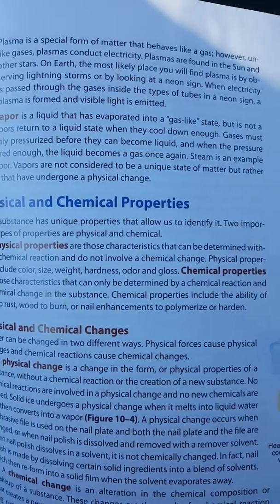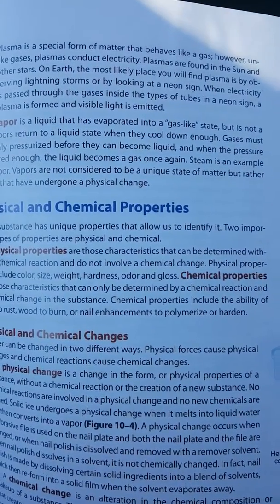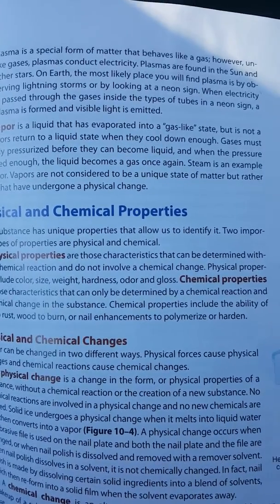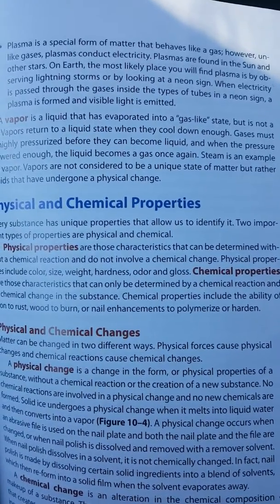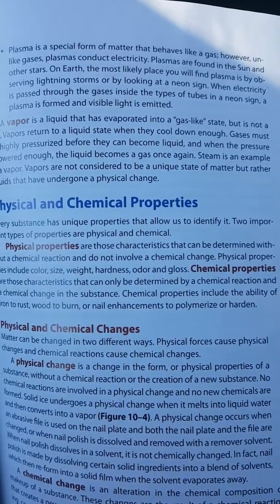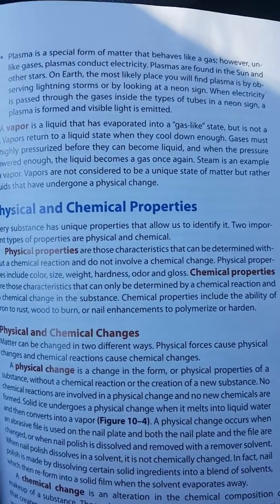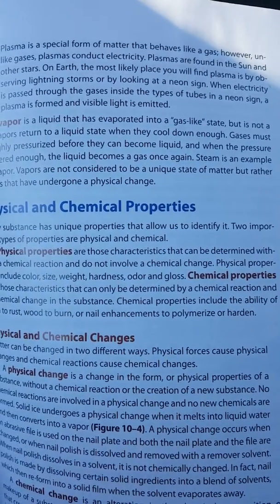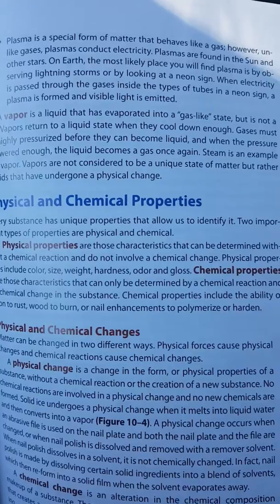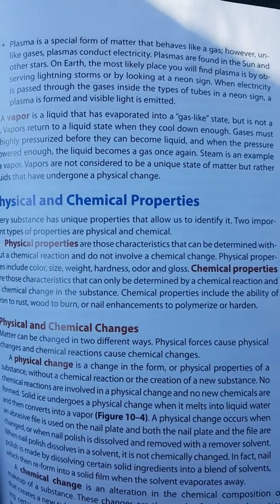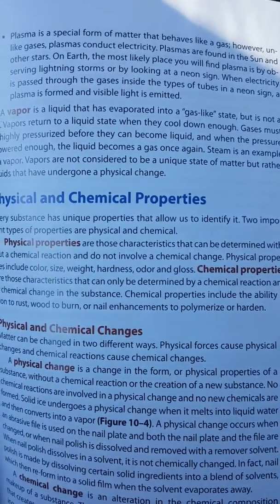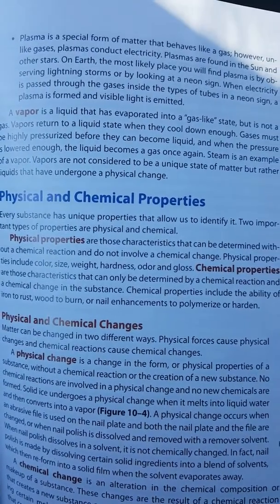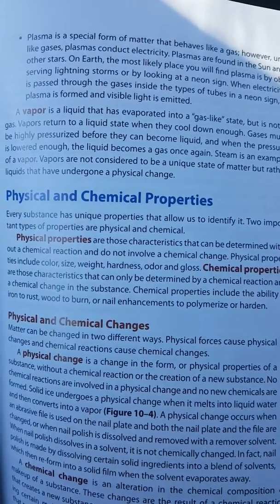Plasma is a special form of matter that behaves like gas. However, unlike gases, plasma conducts electricity. Plasmas are found in the sun and other stars. On Earth, the most likely place you'll find plasma is observing lightning storms or by looking at a neon sign. When electricity is passed through the gases inside the tubes of a neon sign, a plasma is formed and visible light is emitted. A vapor is a liquid that has evaporated into a gas-like state, but is not gas.